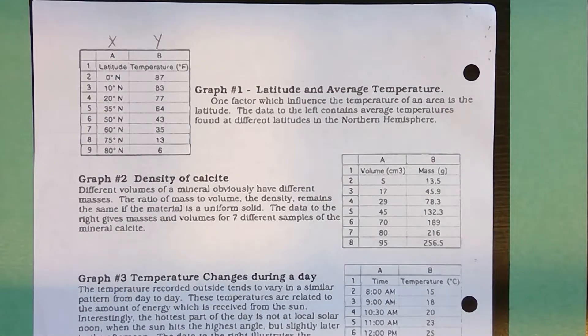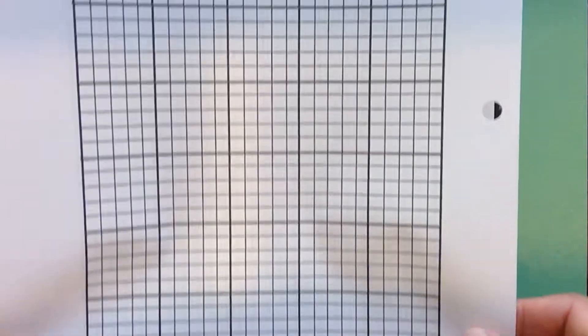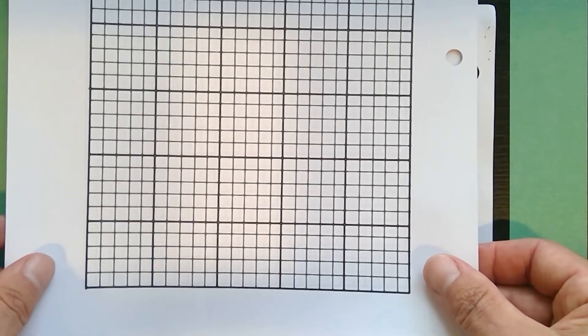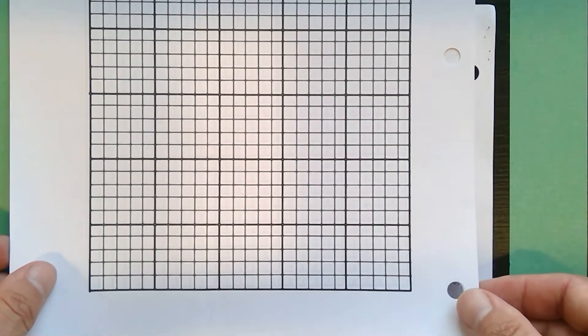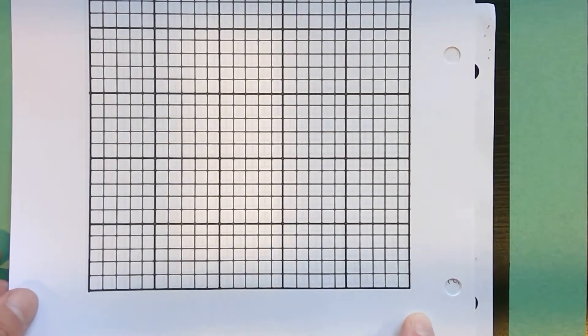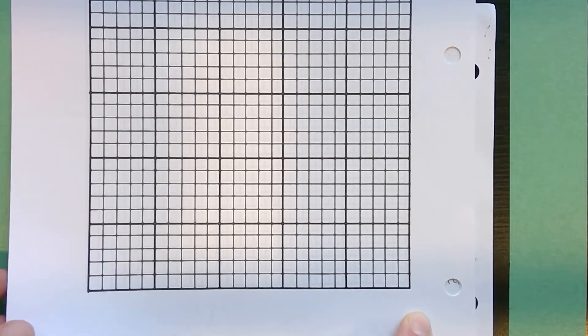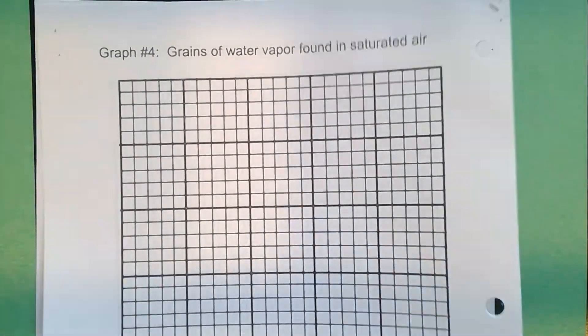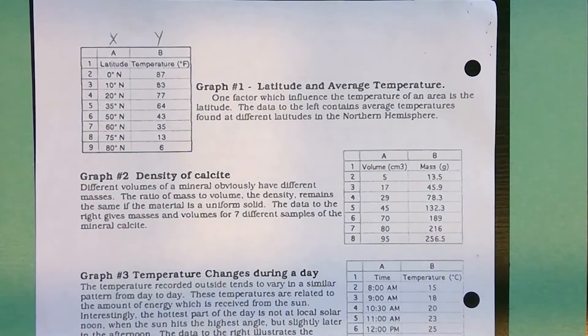The second factor, besides the numbers you're trying to graph, is the actual graph paper you have. For all four of these graphs, you've got 25 boxes going across. That's how much space you have to fit in it. And then 35 boxes going up. So we're going to have to take that into consideration when we set up or create our uniform scales.